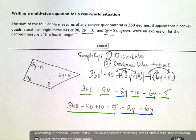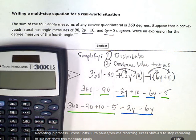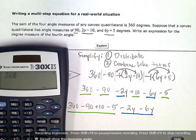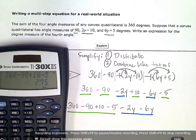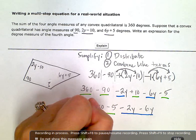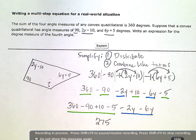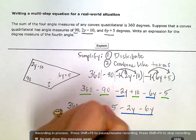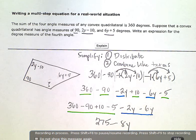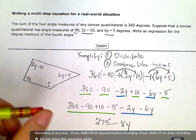So 360 minus 90. Get my calculator here. So 360 minus 90 plus 10 minus 5 gives me 275. So the green all together makes 275. Now over here, if I lose two y's, and I'm saying lose because of the negative here. So if I lose two y's and then I lose six more y's, all together I've lost or I have negative eight y's.